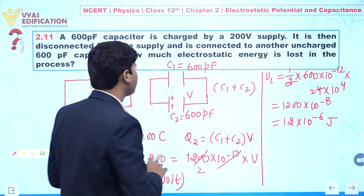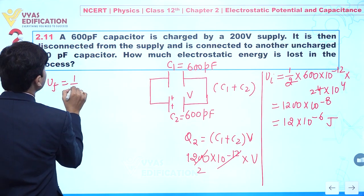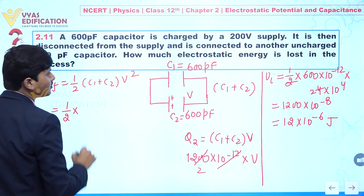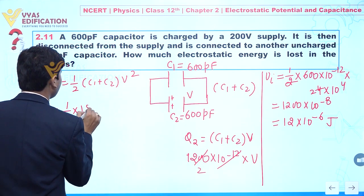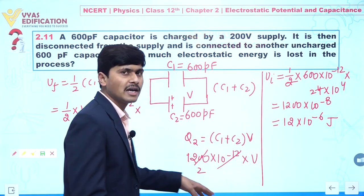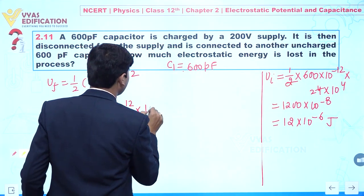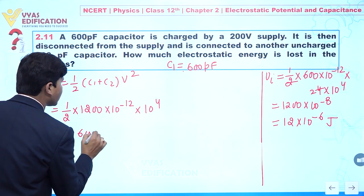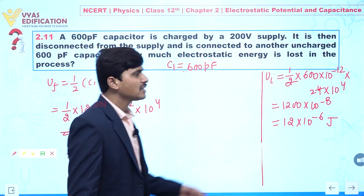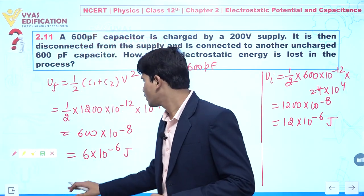Now we calculate the final electrostatic energy, U_final. This is given by one-half times (C1 plus C2) into V squared. The equivalent capacitance C1 plus C2 is 1200 picofarad, that is 1200 × 10⁻¹² farads. The common potential V is 100 volt, so V squared is 10⁴. This gives us 600 × 10⁻⁸, which equals 6 × 10⁻⁶ joule.